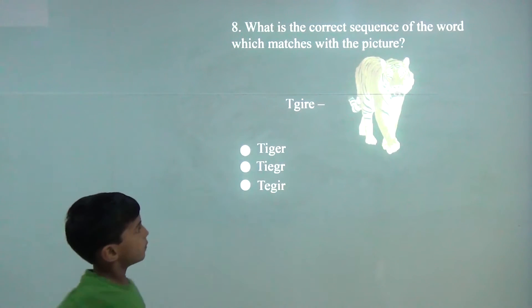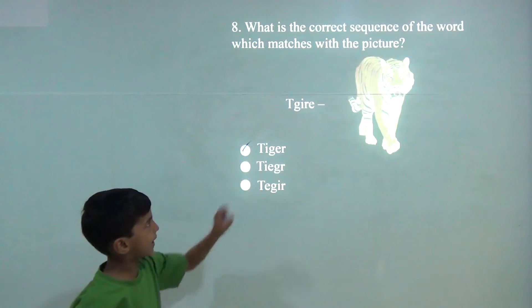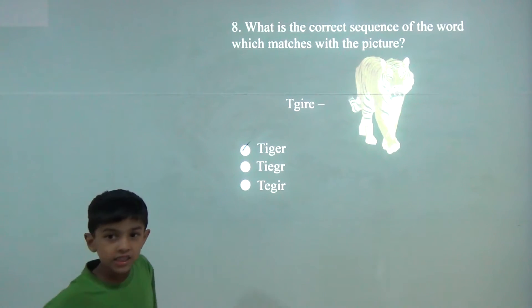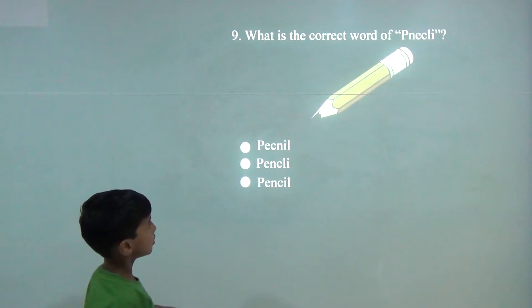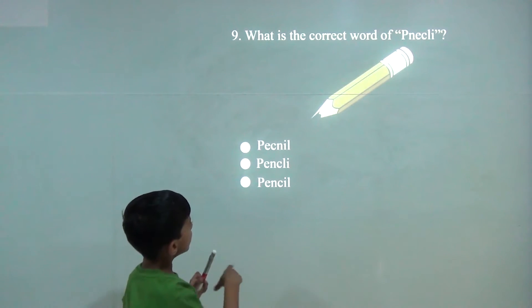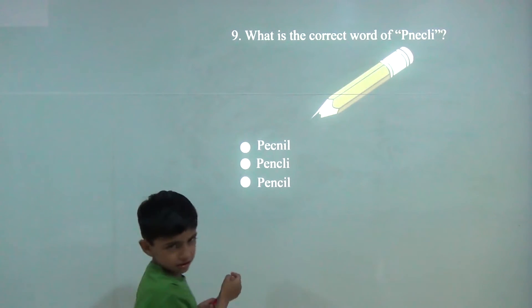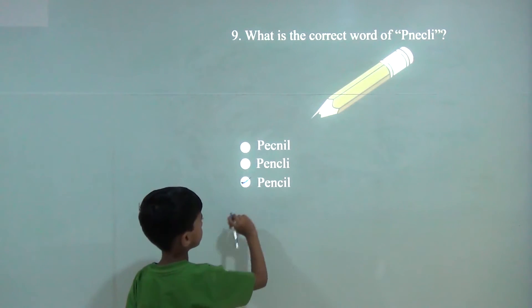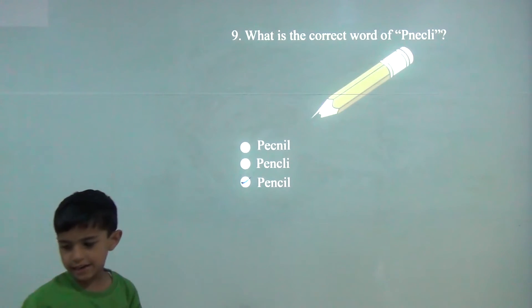The answer would be first. Tiger: T-I-G-E-R. Pencil. So the answer would be last: P-E-N-C-I-L.